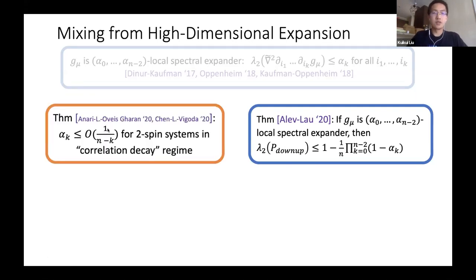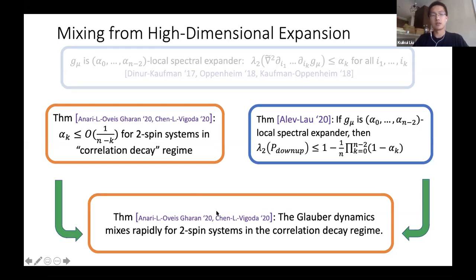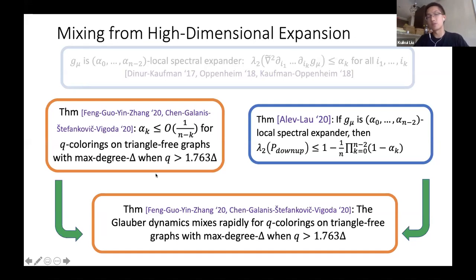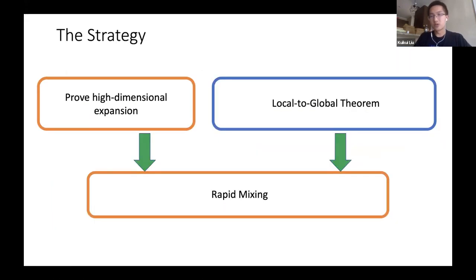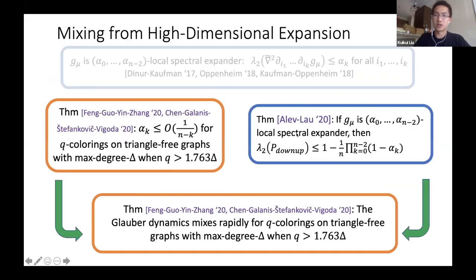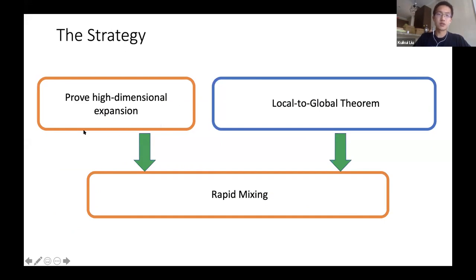Just as with log-concavity you can get mixing from local spectral expansion: if you have local spectral expansion with good parameters alpha_0 up to alpha_{n-2}, then you can get mixing. That's indeed what Alev and Lau showed — Alev talked about this yesterday — proving that local spectral expansion gives a concrete second eigenvalue bound for the down-up walk. What we do in recent work is fill in the other side: we show that the alpha_k's can be bounded nicely, like one over (n minus k), at least for two-spin systems in the correlation decay regime.